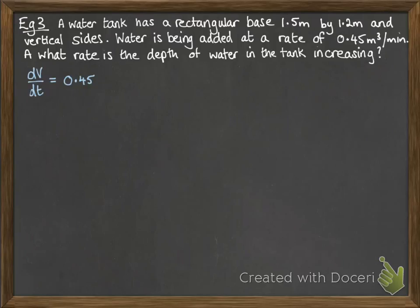A water tank has a rectangular base, 1.5 metres by 1.2, and vertical sides. Water is being added at a rate of 0.45 metres cubed per minute. We want to work out the rate the depth of the water is changing over this time. So we're told a rate. We're told how the volume is increasing over time, and that's 0.45.